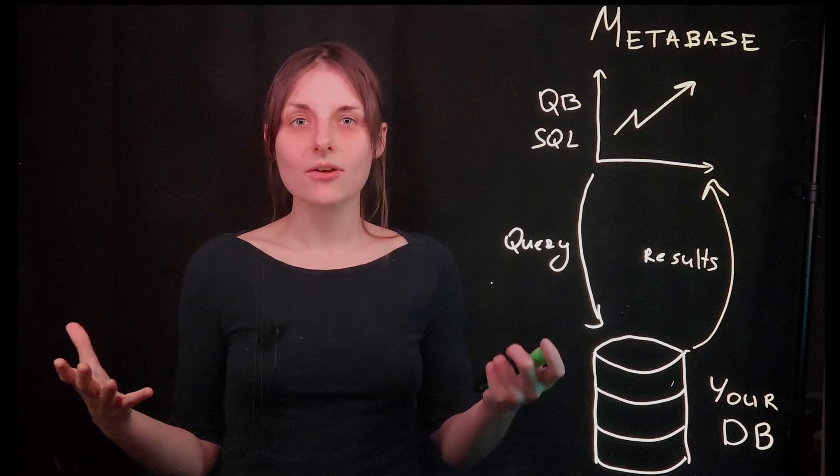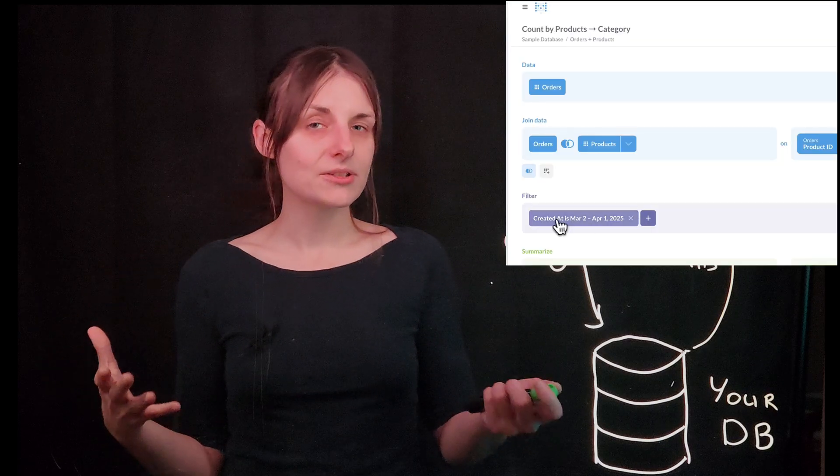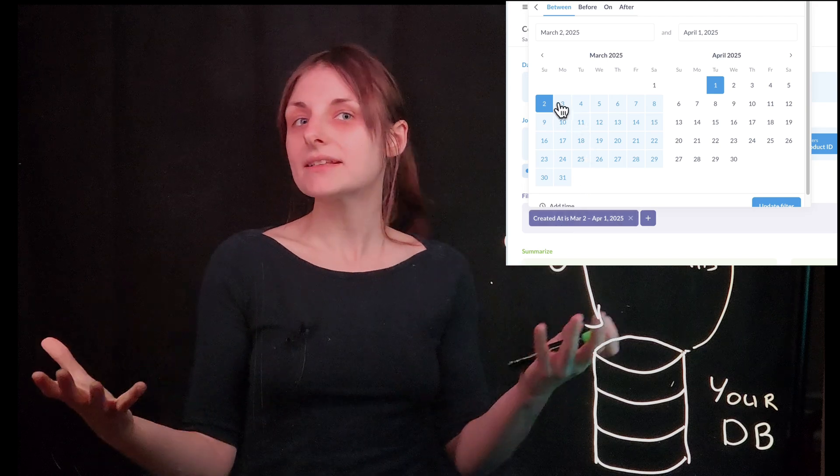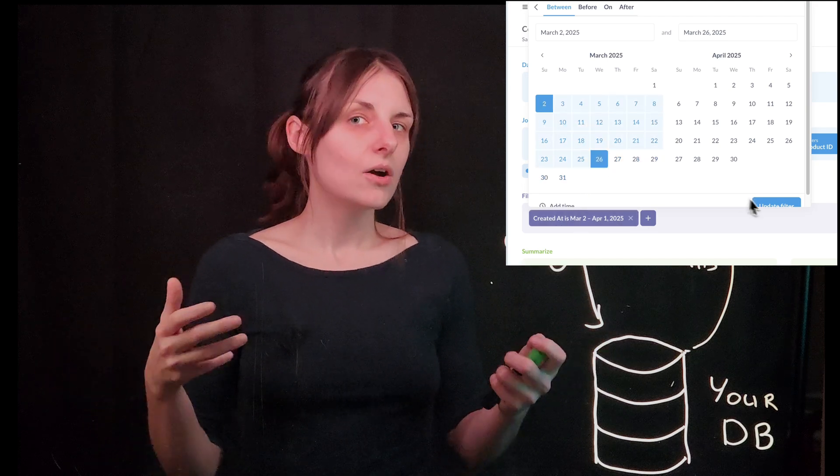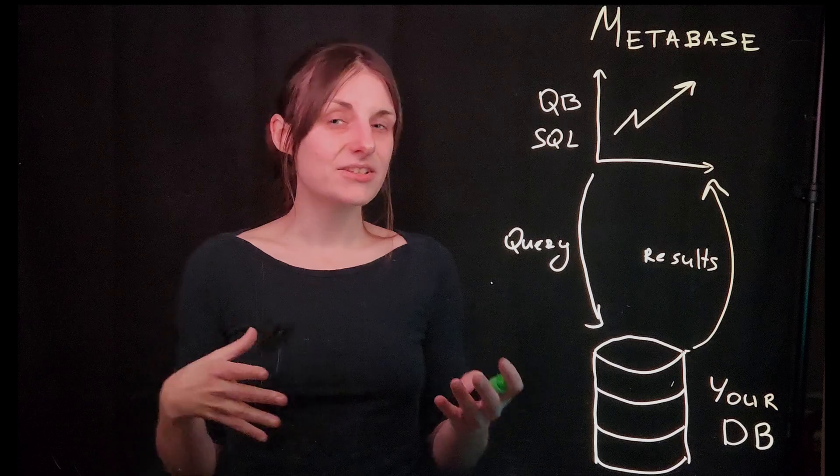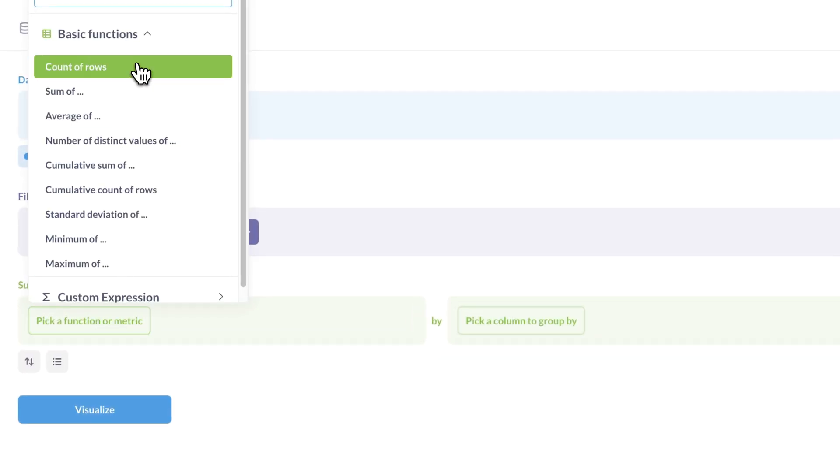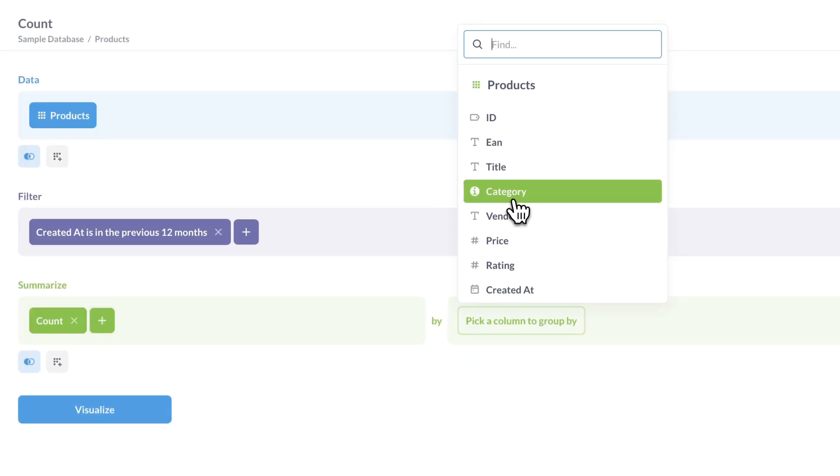Or if Metabase knows that you're using a date column in your query, it can give you a calendar widget as a filter. Or if Metabase notices that you're grouping by a categorical variable, then it can automatically build a bar chart for you.